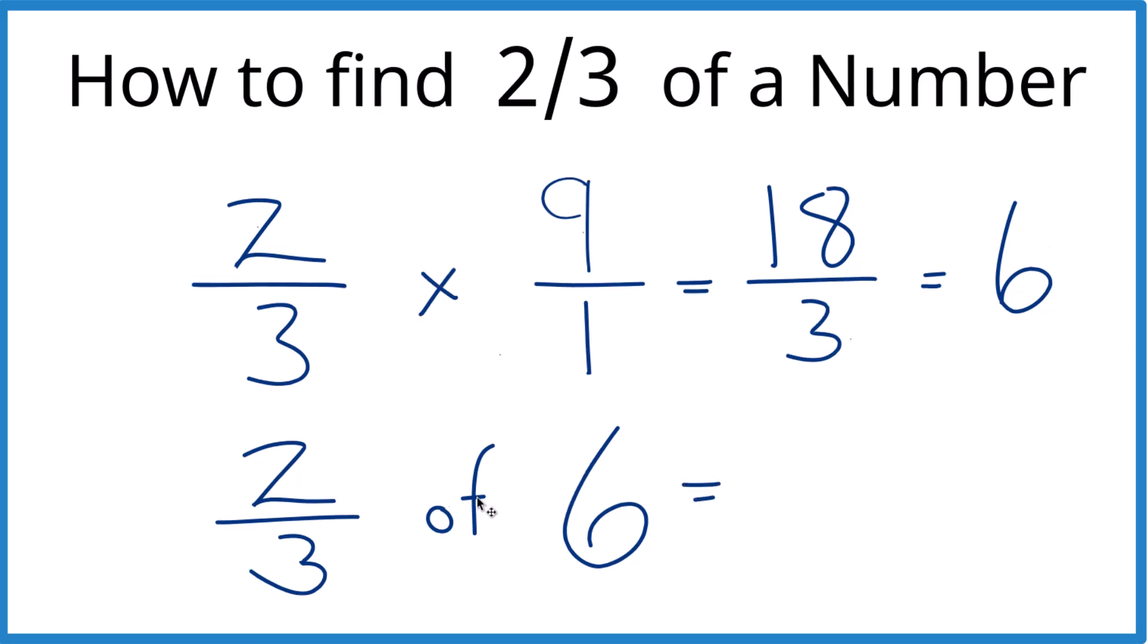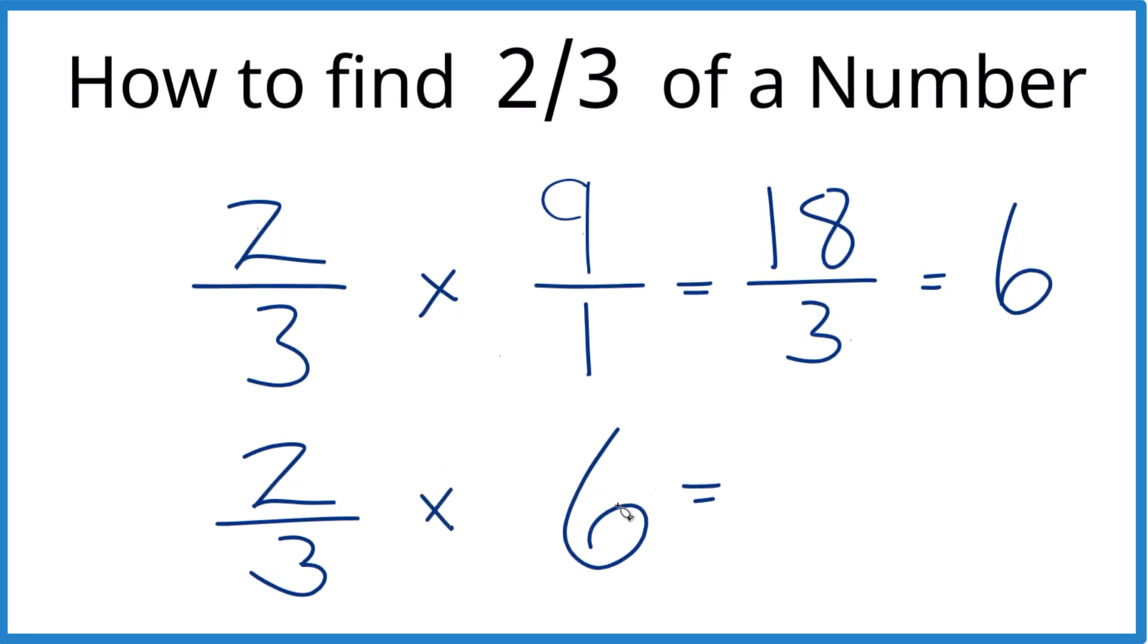So instead of of, we'll call it times. And we're going to call this six over one. Multiply the numerators, then the denominators. Three goes into 12. Four times three is 12. So 12-thirds equals four.